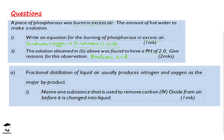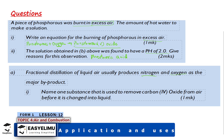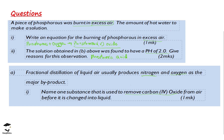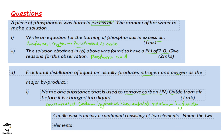The next question: fractional distillation of liquid air usually produces nitrogen and oxygen as major products. Name one substance used to remove carbon dioxide from air before it is changed into a liquid. You can use either concentrated sodium hydroxide or concentrated potassium hydroxide. Another question: candle wax is mainly a compound consisting of two elements — name those two elements. The two elements are hydrogen and carbon, making it a hydrocarbon.